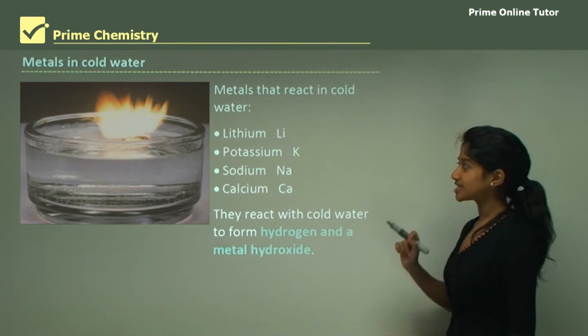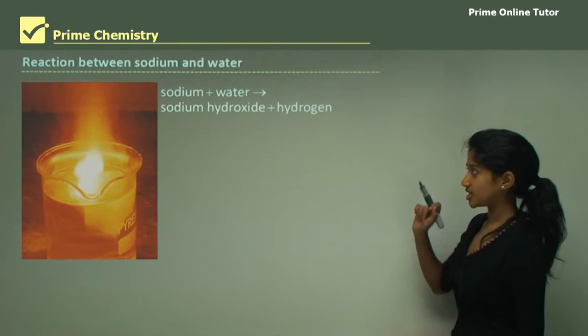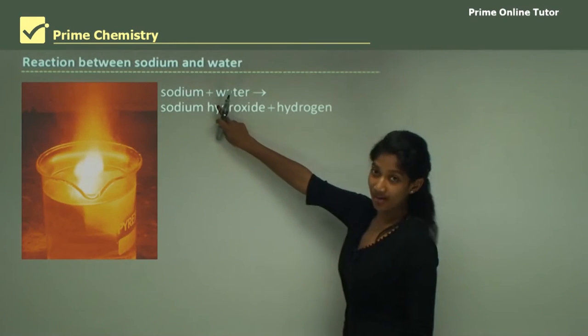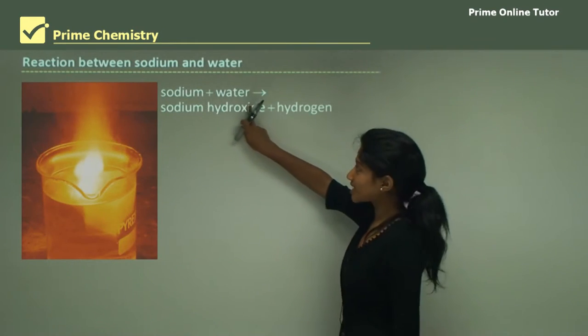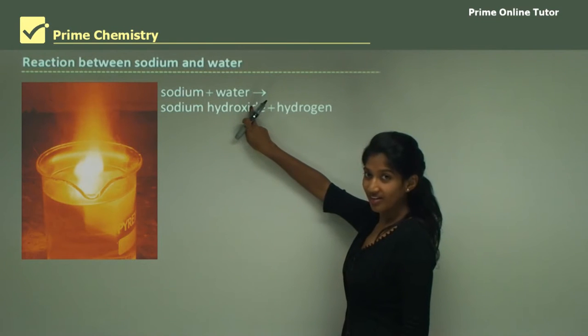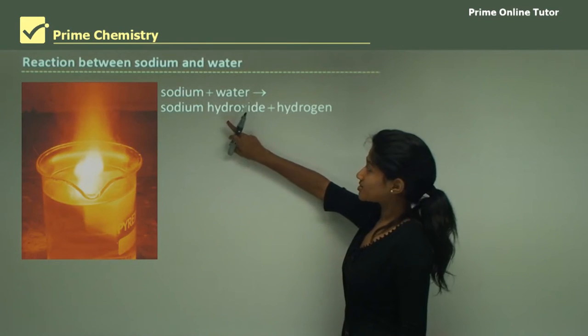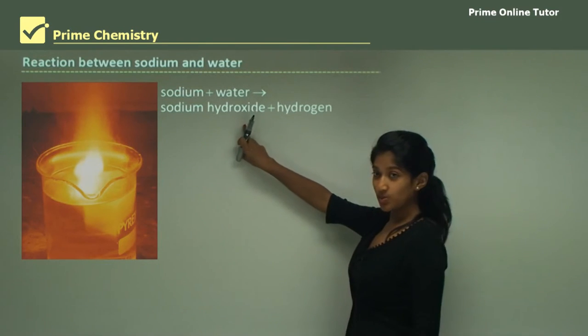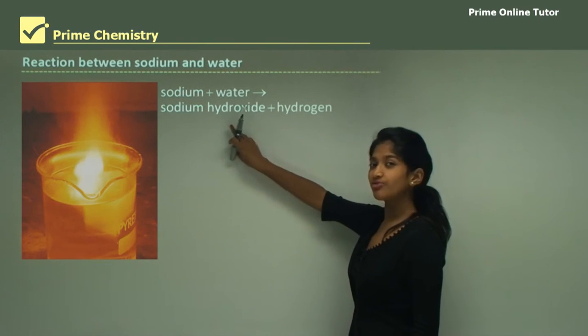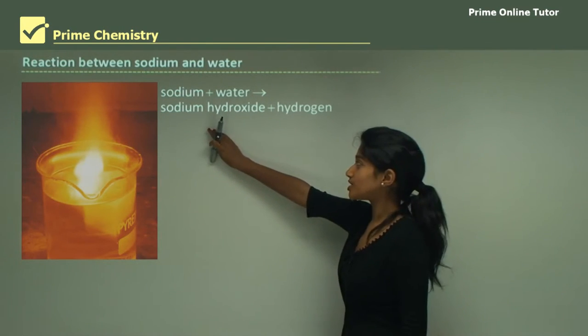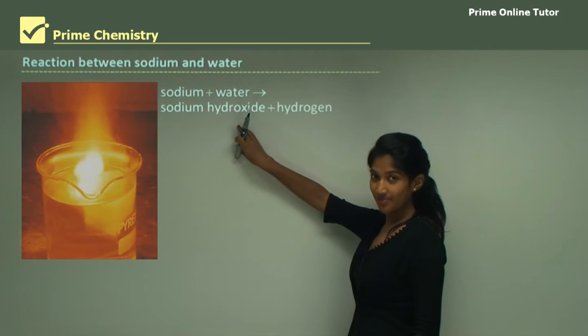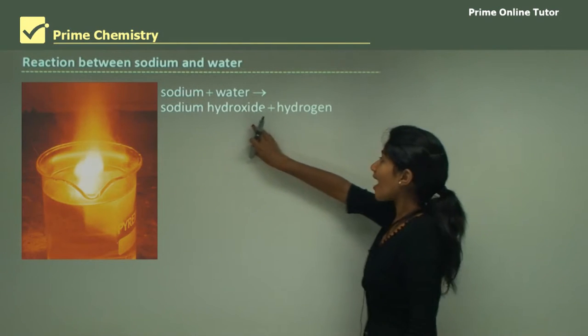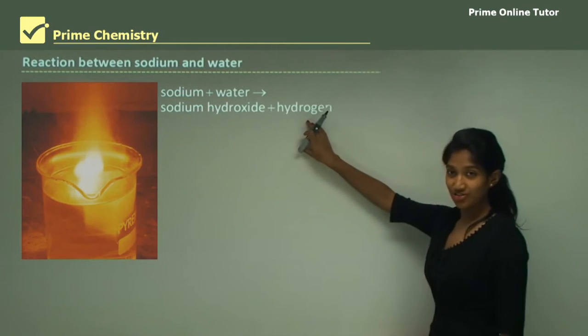Let's see the reaction. We have sodium here reacting with water, and when sodium reacts with water it forms sodium hydroxide and also hydrogen.